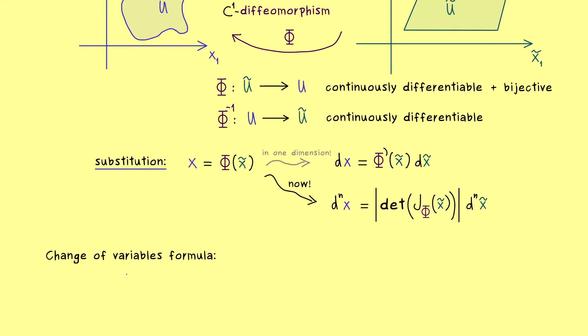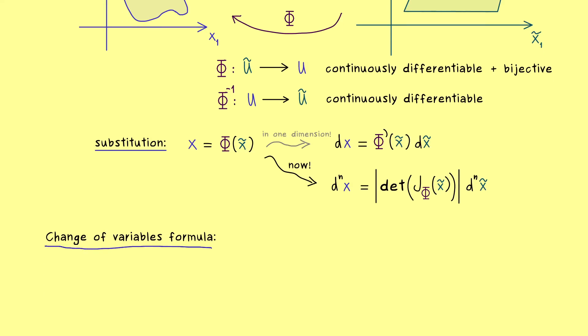And you already know this is what we call the change of variables formula in n dimensions. Hence for calculating the integral of f over the set U, we can also integrate another function over the set U tilde. And this other function you simply get by substituting x in the way we showed above. This means inside the function f we put the function phi of x tilde. And instead of d^n x, we have the absolute value of the determinant of the Jacobian of phi times d^n x tilde.